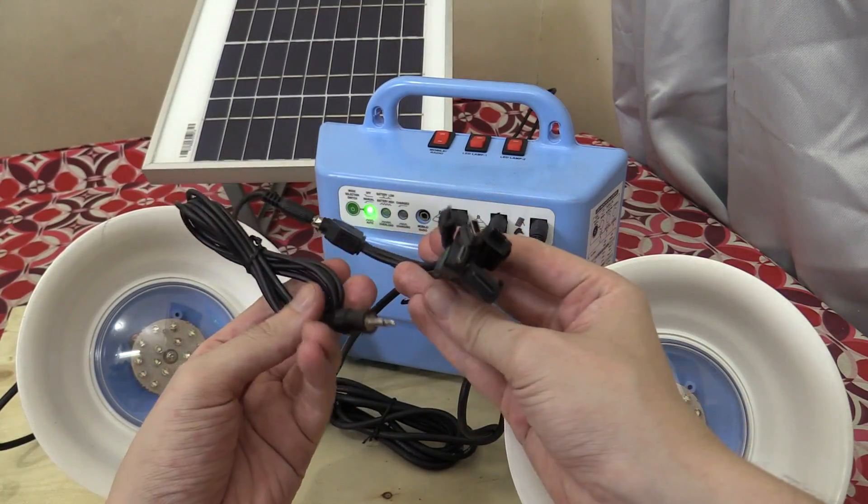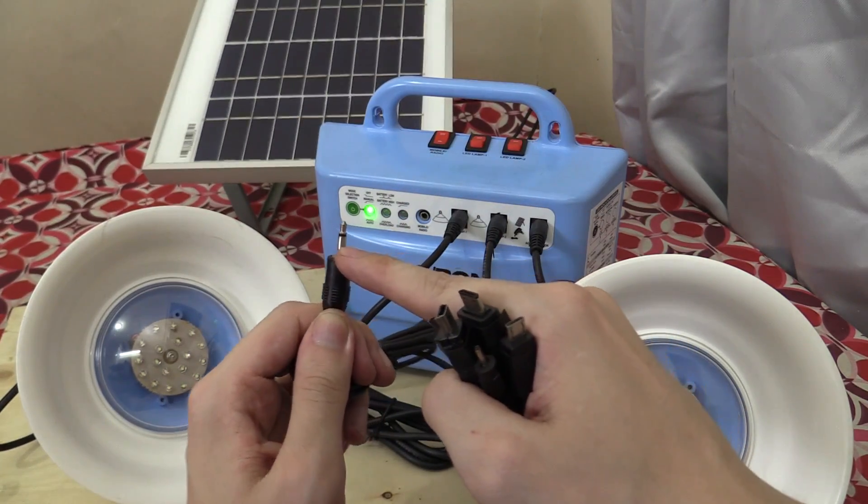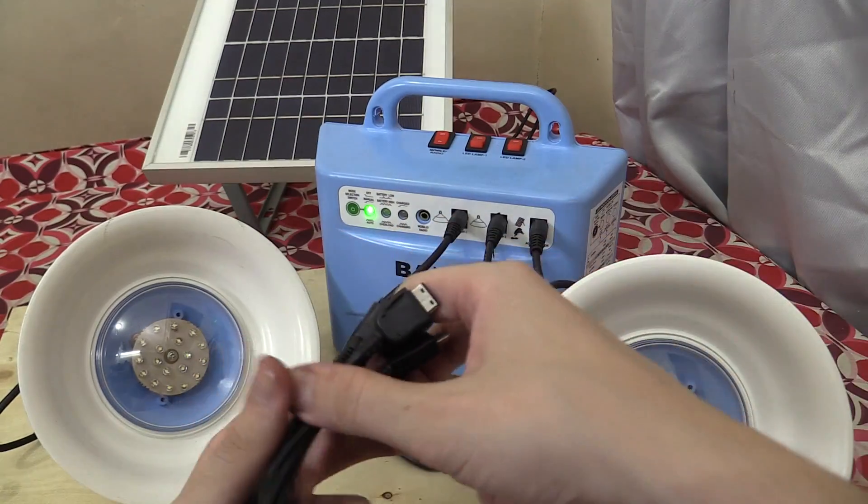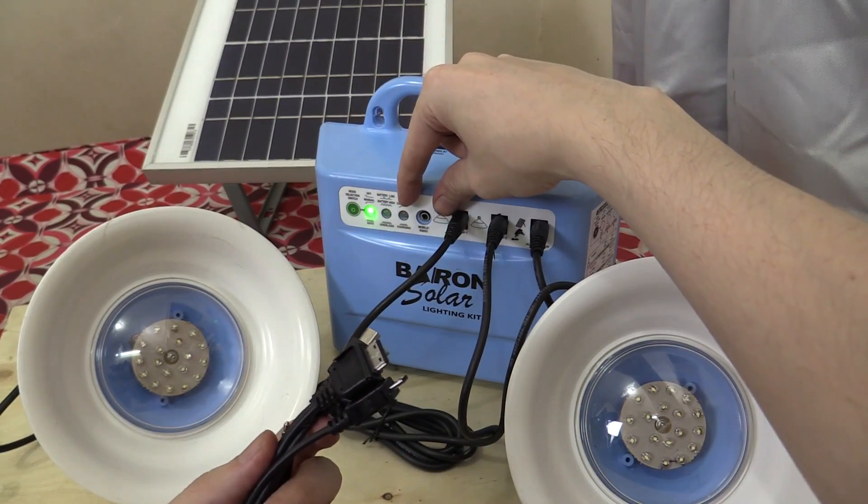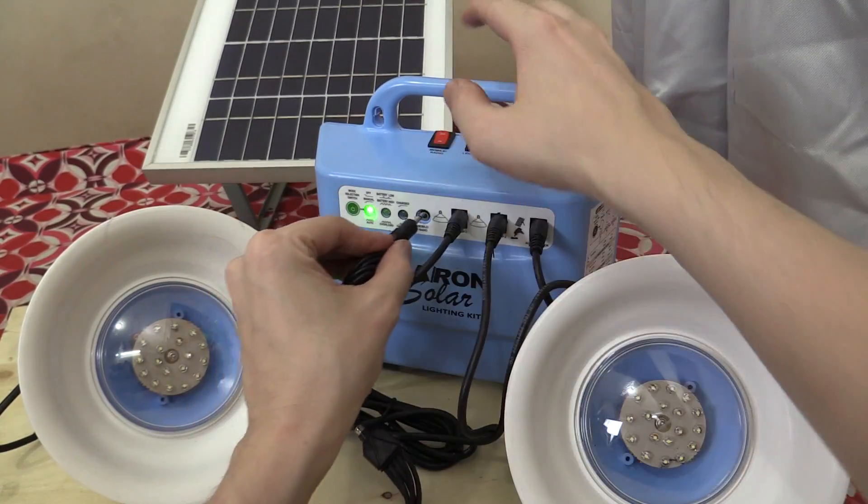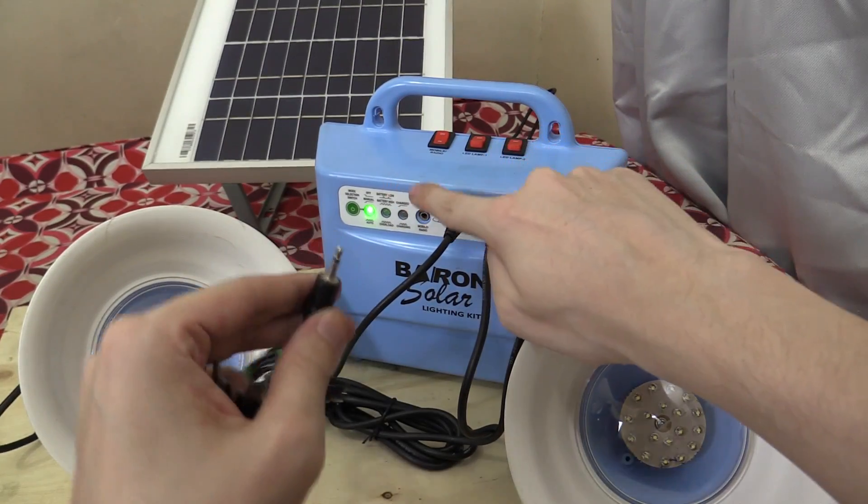Now, aside from the included lights, they also give you this multi-connector USB cable. Now, I don't know why they chose this design of this, like, 3.5mm jack to plug in. It would have been much better if they just had a USB port on there. But there is actually a very, very big limitation of this cable, and I'm going to show you it now. Well, not even so much this cable, but this specific output. It's very limited.